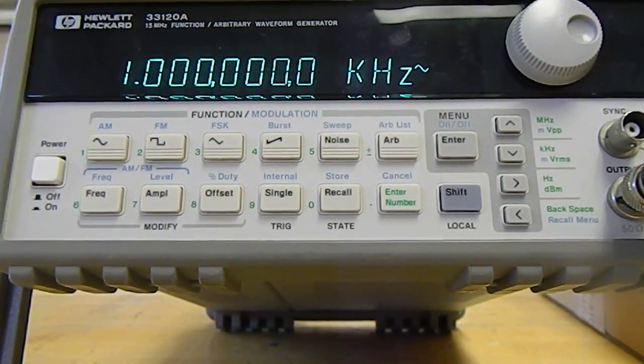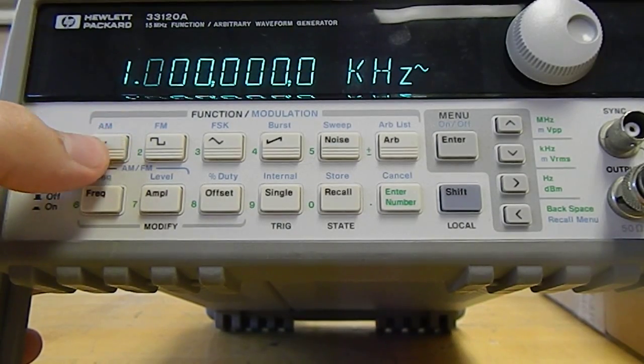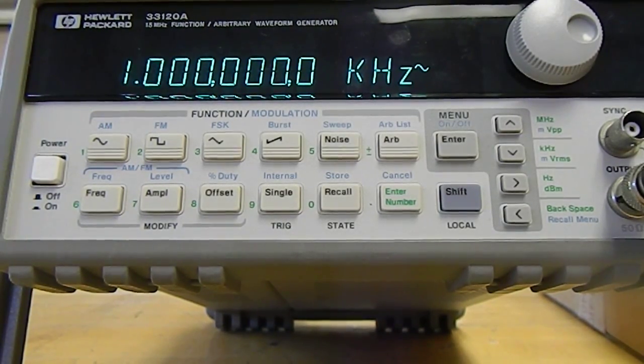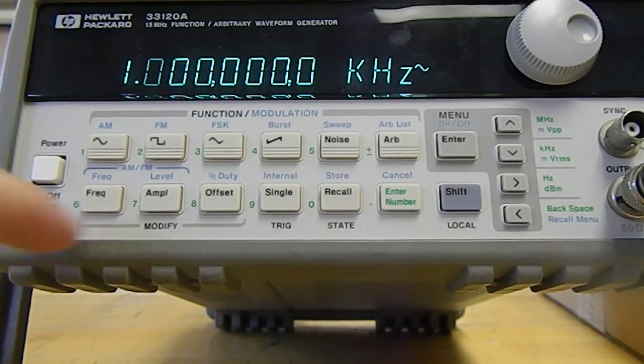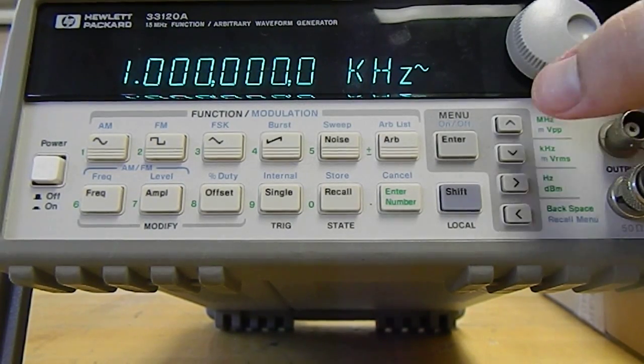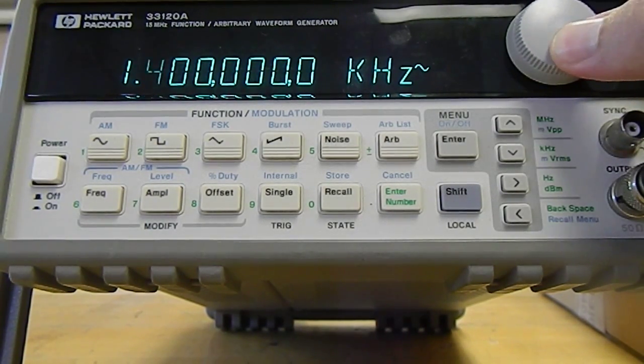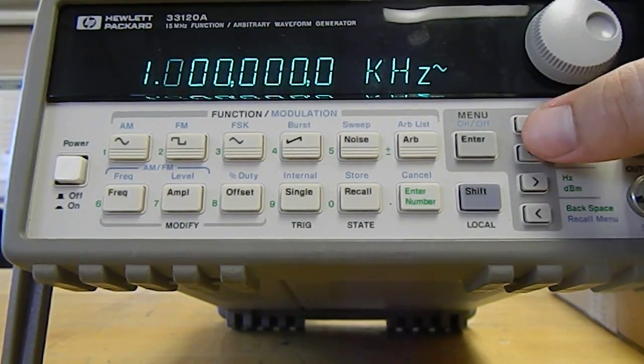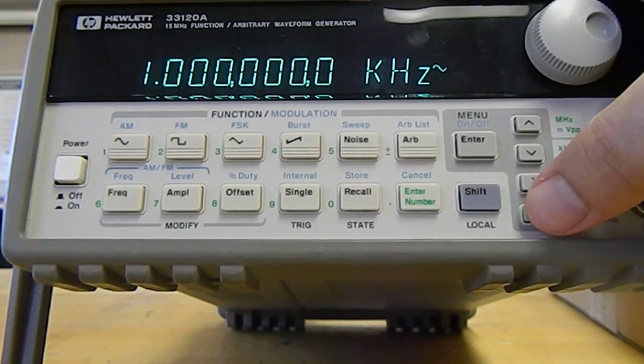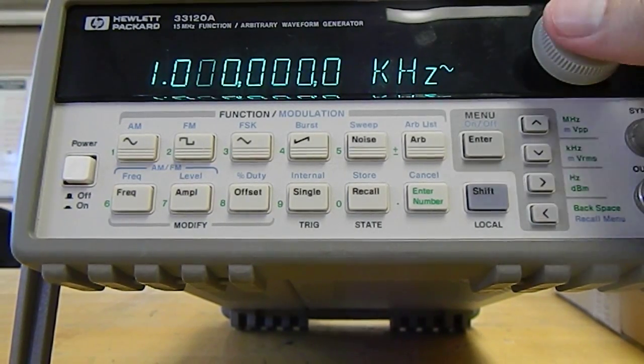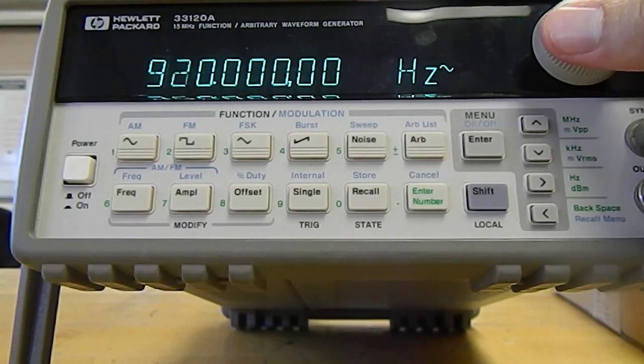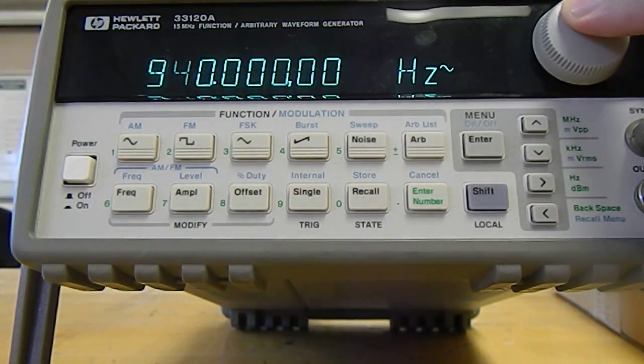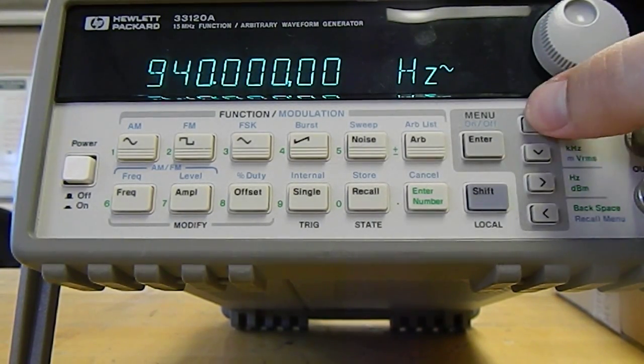So let's start with sine wave. Now that we have a sine wave chosen, we can set the frequency by clicking on frequency, and then we can either use the scroll wheel up here to adjust the frequency or the arrow keys. You can see that by where you set the arrow key, it shows you by what unit it changes as you use the scroll wheel or the up and down arrow keys.